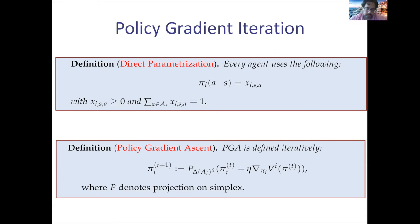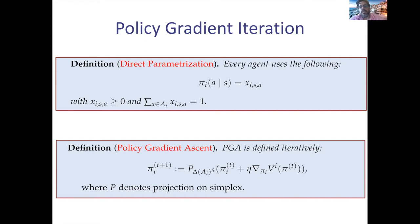There are other parameterizations as well. One example is softmax: since you want probability distributions, you might use a fraction where the numerator is some non-negative number and the denominator is a renormalization factor so all parameters sum to one. This is the softmax parameterization, and there are other parameterizations depending on the application.